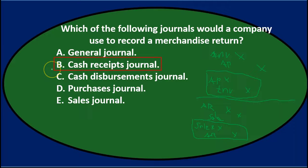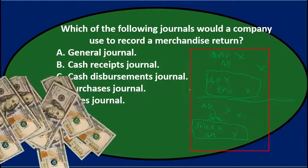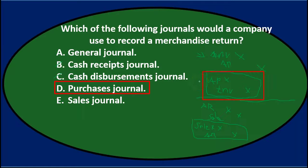Looking at the options: B, cash receipts journal, requires cash to be received — but we're assuming the sale was on account, so no cash is involved. C, cash disbursements journal, also involves cash — which doesn't apply here. D, purchases journal, was used when we originally purchased the inventory, but the return reverses those accounts in the opposite direction, so it doesn't fit.